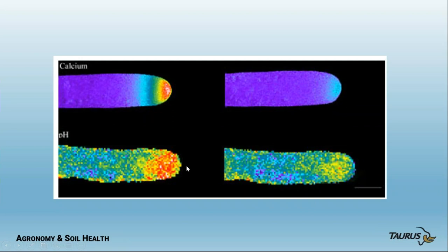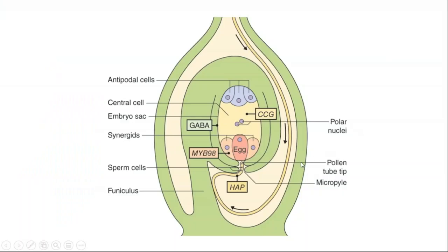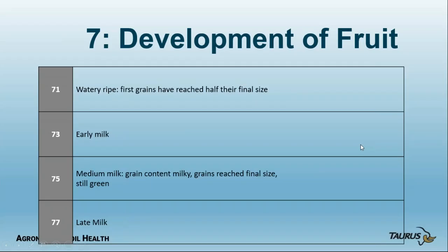The pollen tube comes down to the ovary — there's only one opening. The two sperm cells are moving along: when the tip breaks, one sperm cell goes to the egg and forms the germ; the other unites with the two polar cells and forms the endosperm. Each has its own genetic material and development. GABA amino acids are involved in guiding the pollen tube into the ovary. Once pollination is complete, it won't accept another pollen tube.